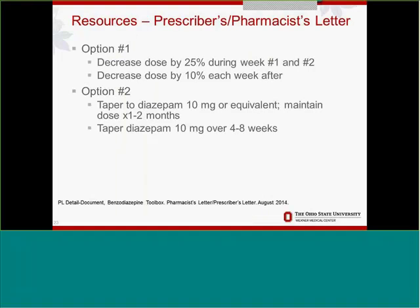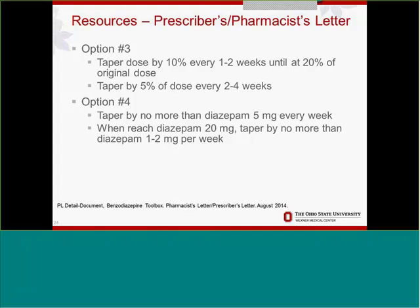Prescribers Letter and Pharmacist Letter both have a benzodiazepine toolbox with four taper recommendations. Option one: decrease by 25% in weeks one and two, so 50% of the dose is off quickly, then 10% each week — that's quite fast. Option two: taper to diazepam 10 milligrams, stay there one to two months, then taper over four to eight weeks — also fairly quick. Option three: taper by 10% every one to two weeks until 20% of the original dose, then 5%. Option four: taper by no more than diazepam 5 milligrams per week, and once at diazepam 20 milligrams, by no more than one to two milligrams. These tapers take quite a while — probably months to successfully get a patient off a benzodiazepine.